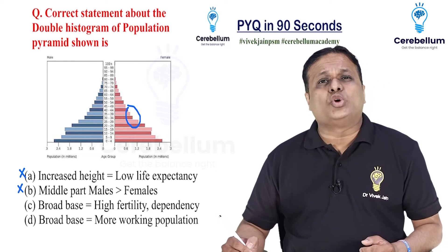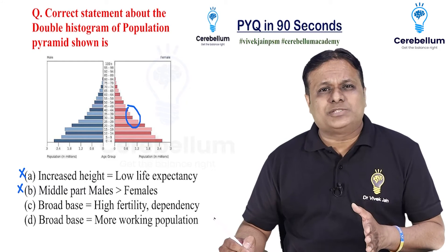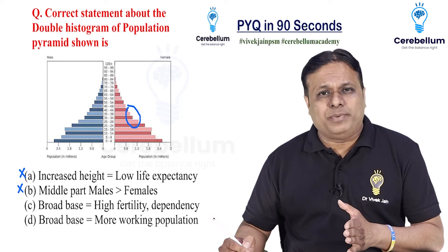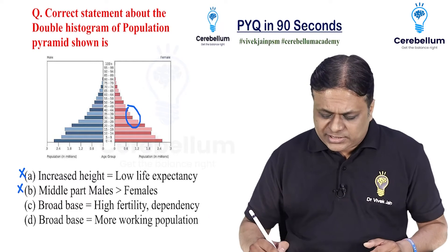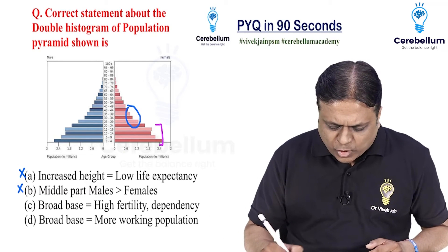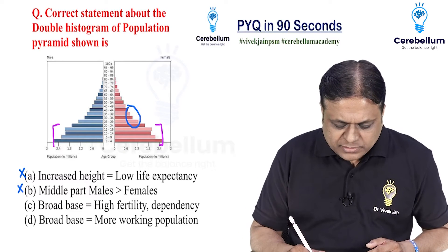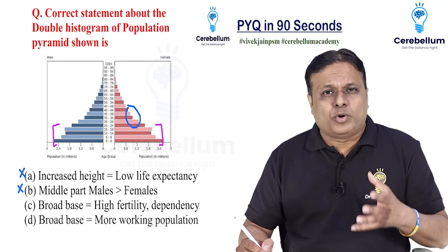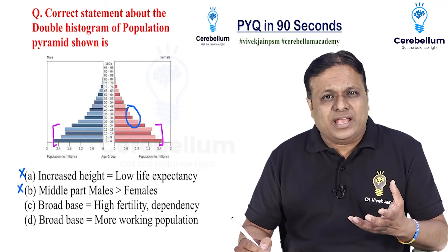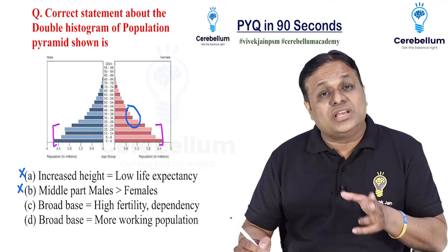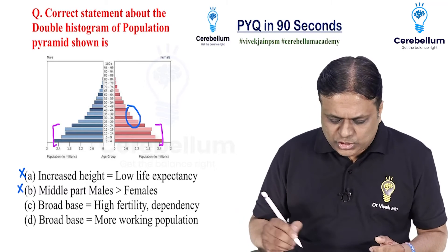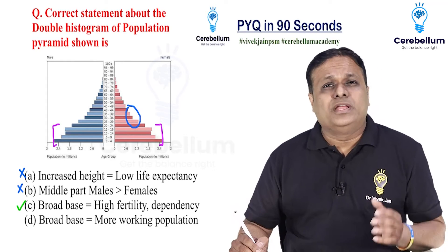Look at choice number C. Broad base means high fertility and high dependency. This is correct, friends, because broad base means more number of children, more younger population, higher fertility, and higher young age dependency ratio also.